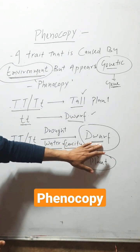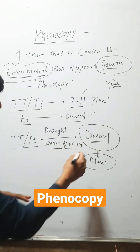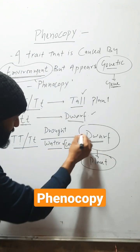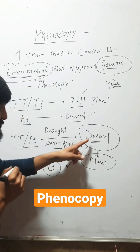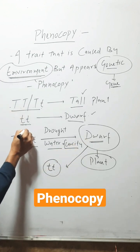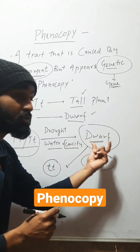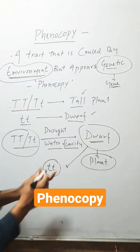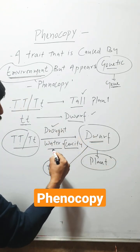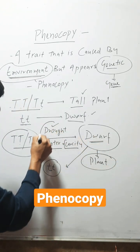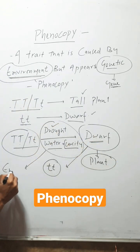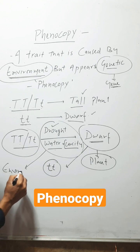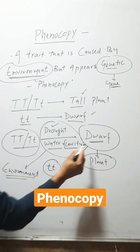So by looking at that plant it looks like it has the tt genotype, but actually it has the TT or Tt genotype. This trait of dwarfness is caused by drought — water scarcity — meaning it is caused by environment. So this is called Phenocopy.